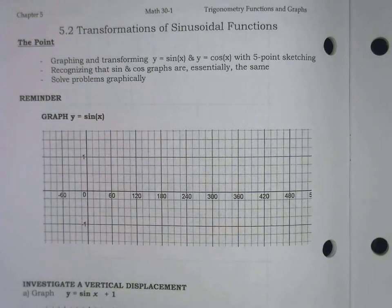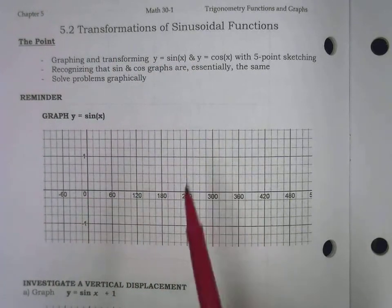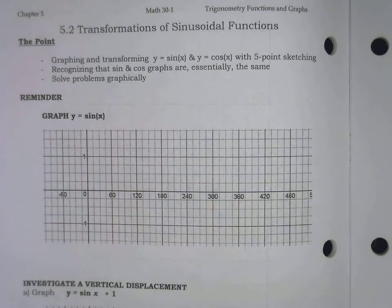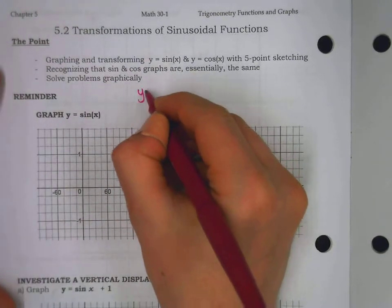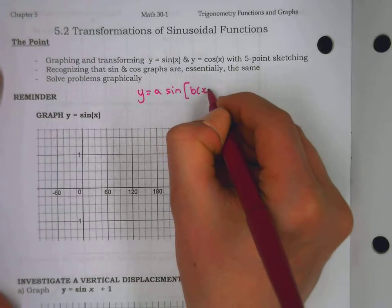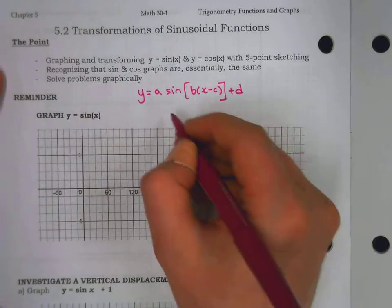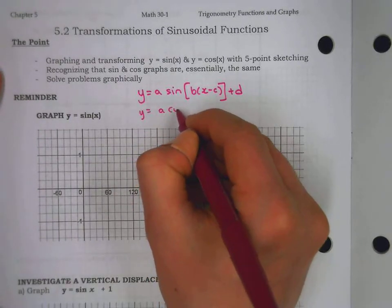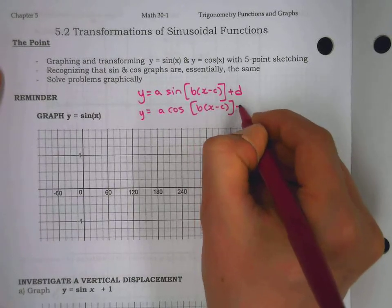Good day, Math 30-1s. We continue our conversation about five-point sketches, this time as transformations. Eventually we don't have to think about whether it's a vertical stretch or a horizontal stretch. We talk a little bit more about the parameters that make up A sine of Bx minus C in factored form, plus D — or as a cosine graph, A cos of Bx minus C plus D.